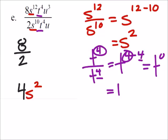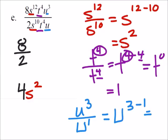Then we've got u cubed divided by u. Now the u in the denominator doesn't show the exponent, but it has one. It's one because it's one u. So we would have u to the power of 3 minus 1, which is u to the power of 2.